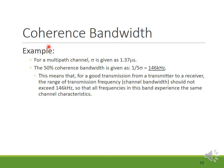As an example of coherence bandwidth, for a multipath channel with σ equal to 1.37 microseconds, the 50 percent coherence bandwidth is 146 kilohertz. This means that for good transmission, the channel bandwidth should not exceed 146 kilohertz, so all frequency components experience the same channel characteristics. If the bandwidth exceeds 146 kilohertz, signal components experience different channel characteristics.